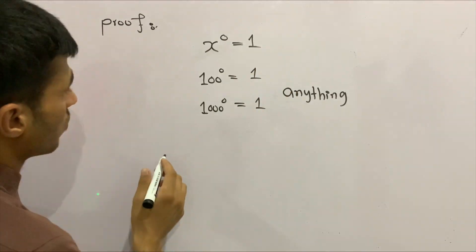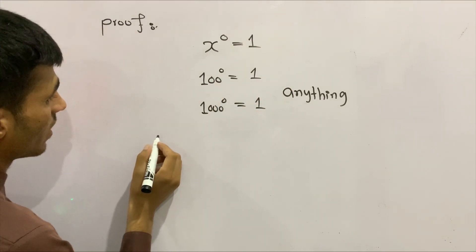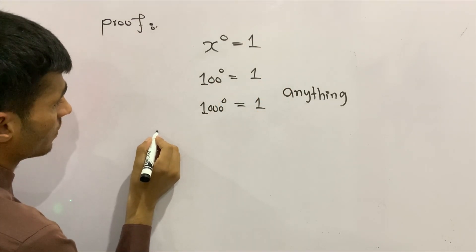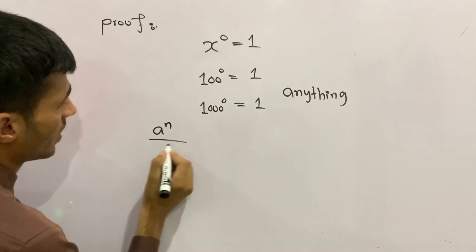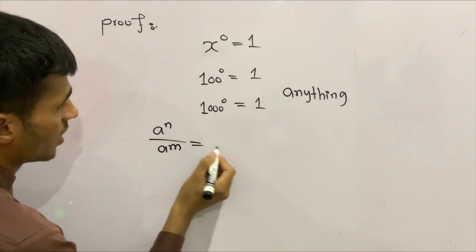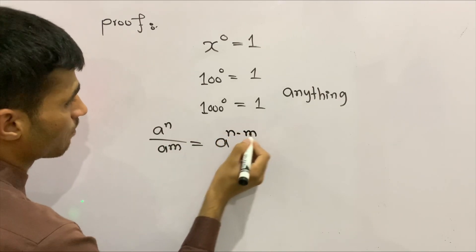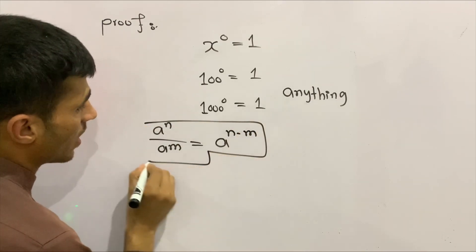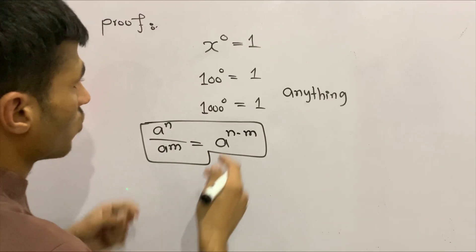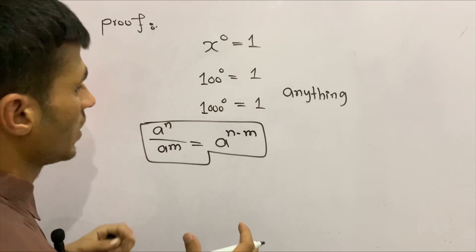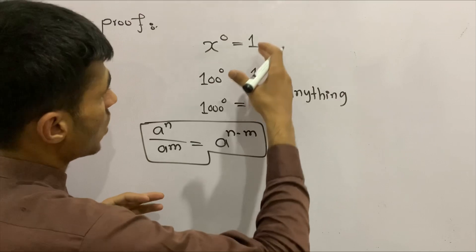Before jumping into the lesson, I want to remind you of one of the laws of exponents. In case of division, a to the power of n divided by a to the power of m equals a to the power of n minus m. Keeping this law in mind, we're going to solve this really easily.